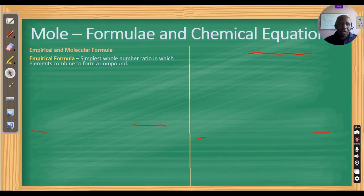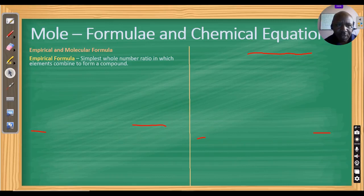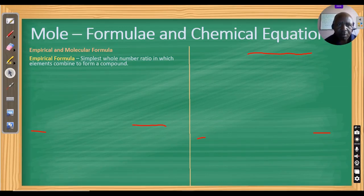Let us look at empirical and molecular formula — another common area within this topic. Empirical formula is the simplest whole number ratio in which elements combine to form a compound. For example, CO₂ — the simplest ratio in which carbon and oxygen combine is 1:2.